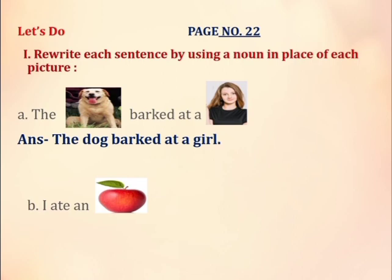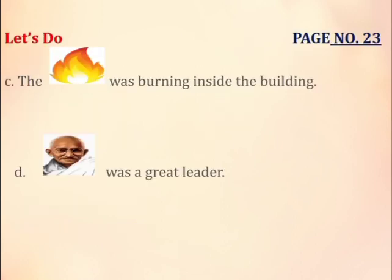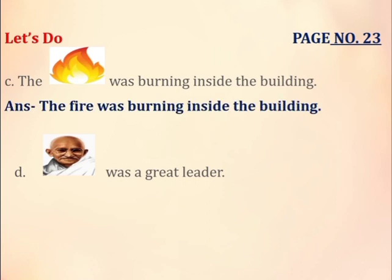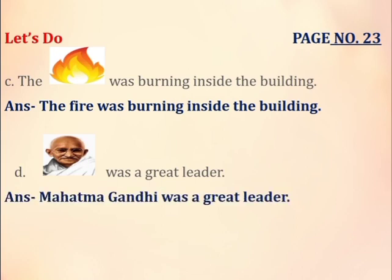B part: I ate an apple. C part: This is the picture of a fire, so we'll write it as: The fire was burning inside the building. D part: I hope you all can recognize this picture. This is the picture of our father of the nation, Mahatma Gandhi. So we'll write: Mahatma Gandhi was a great leader.